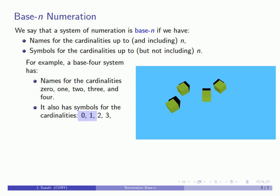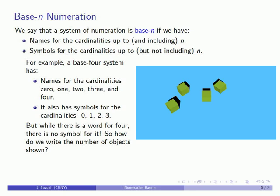And the reason that we don't include a symbol for the last one is if you look at this point we have 1, 2, 3, 4 symbols for our base 4 system. Now one important feature to notice is that while we do have a word for 4 things we don't have a symbol for it. And so the question is how can we write about the collection that we have shown? We have 4 objects but how can we write this number?